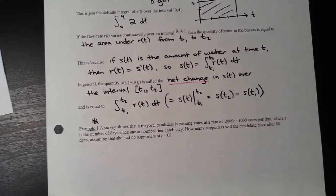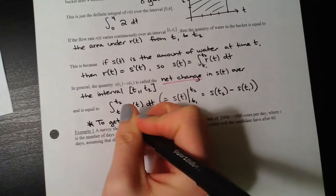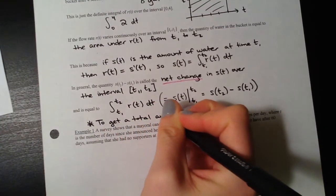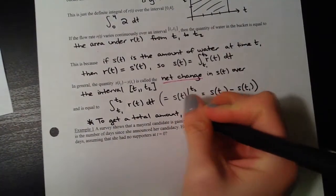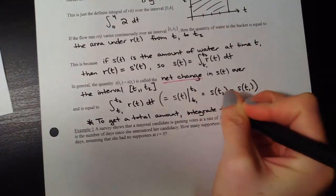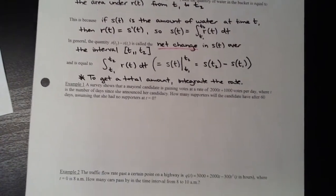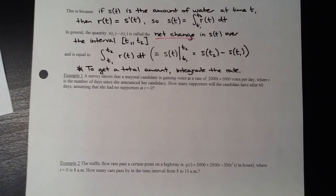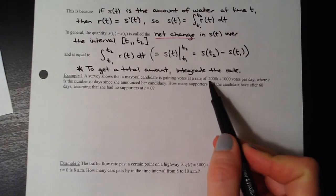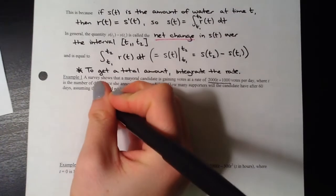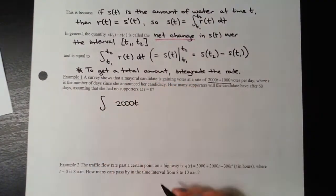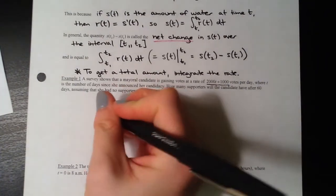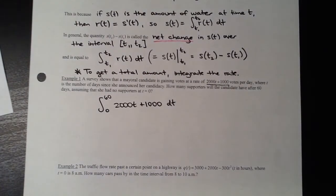Here's a very important sentence: to get a total amount — like the total amount of water in a bucket — you integrate the rate. That is a huge idea the AP test will absolutely cover. So if we're trying to get the total amount of supporters, we integrate the rate of supporters. We set up the integral from 0 to 60 of that rate function, dt, since everything is in terms of T.